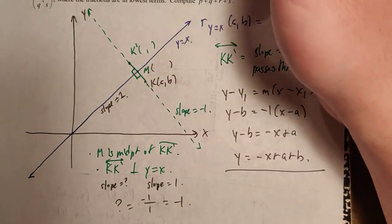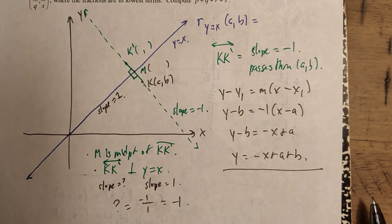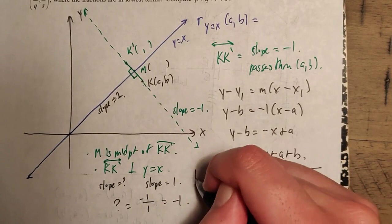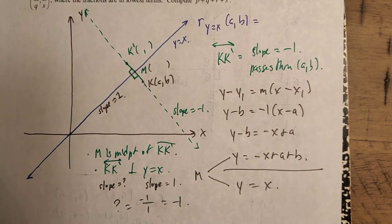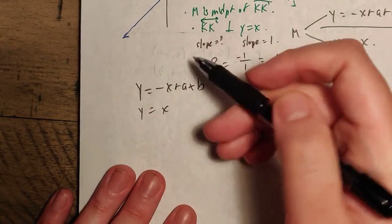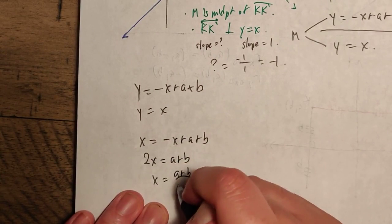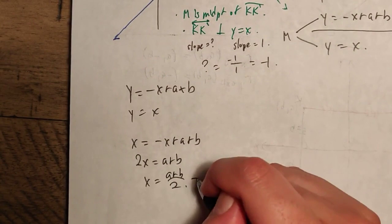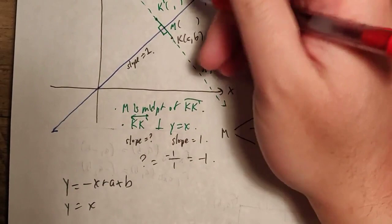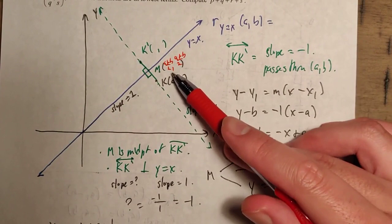Point M is on the line y equals x and also on the green line y equals negative x plus A plus B. Since it satisfies both equations, we set them equal: x equals negative x plus A plus B, giving 2x equals A plus B, so x equals (A plus B) over 2. Since y equals x on that line, y is also (A plus B) over 2. So M has coordinates (A plus B)/2 comma (A plus B)/2.